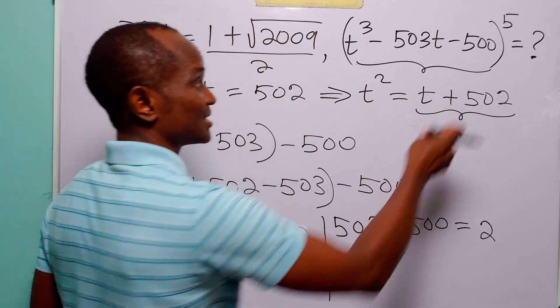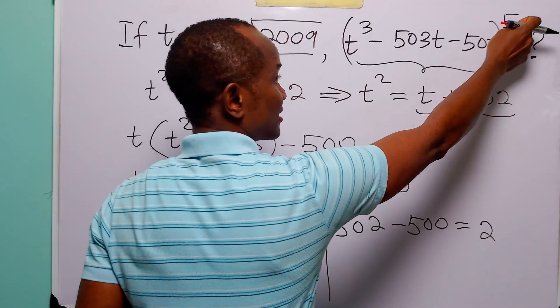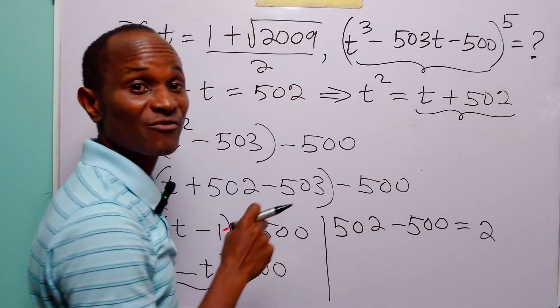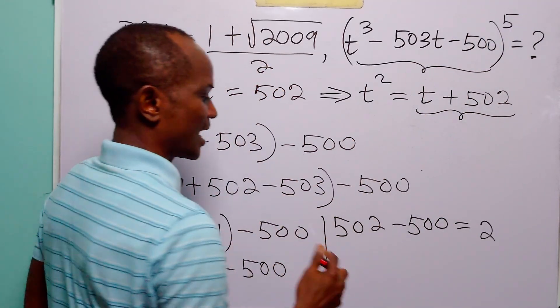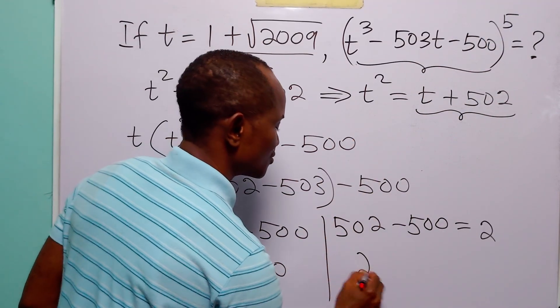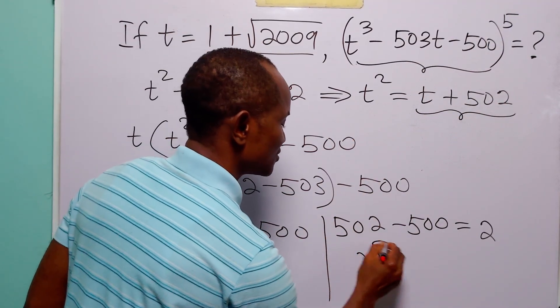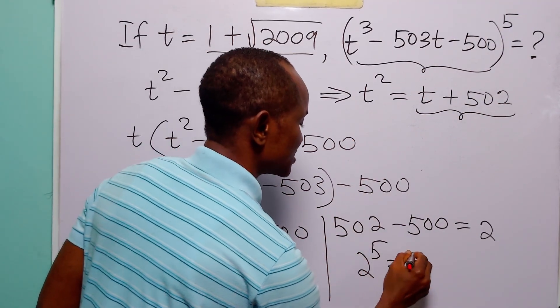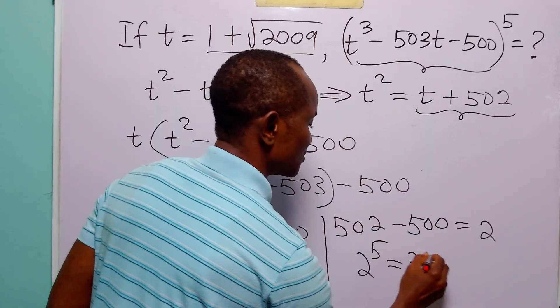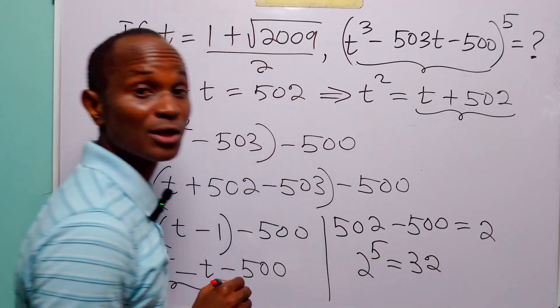So the last part is to raise 2 to the power of 5. And of course, 2 raised to the power of 5 is equal to 32.